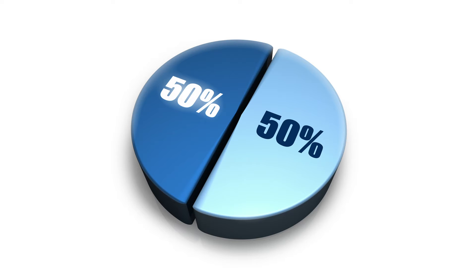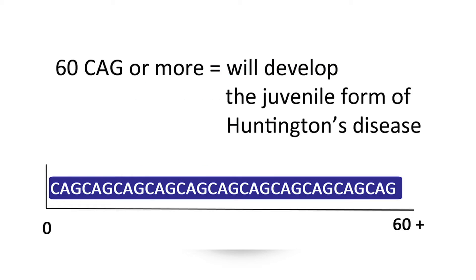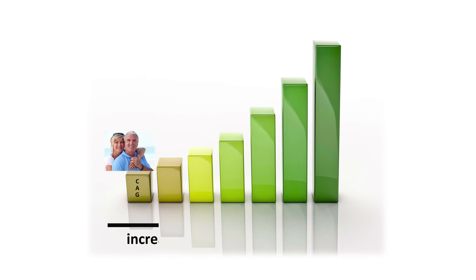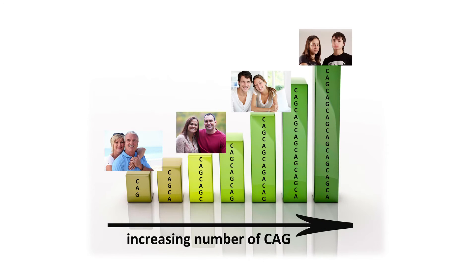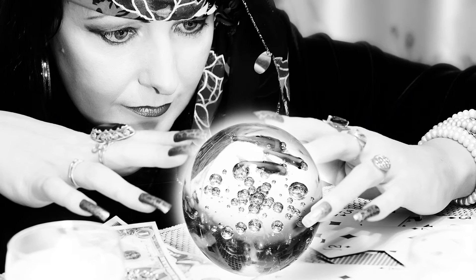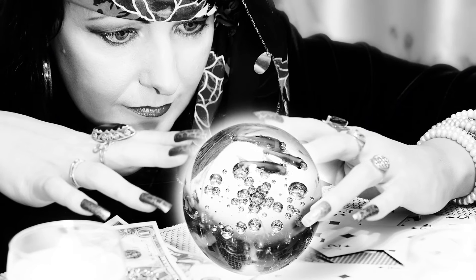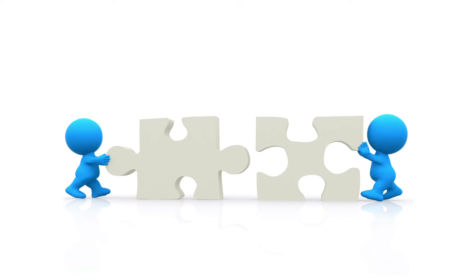Beyond 60 repeats, it is the juvenile form of the disease and symptoms appear before the age of 20. In general, the higher the number of CAG triplet repeats, the earlier the age at which symptoms appear. However, current knowledge cannot predict the exact age at which symptoms will appear or their severity. Furthermore, two people with the same number of repeats may start showing symptoms at different ages.